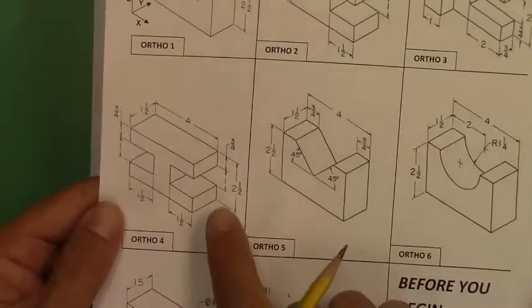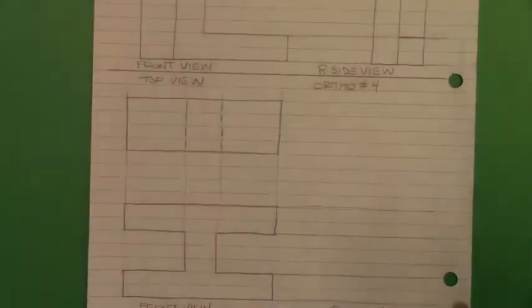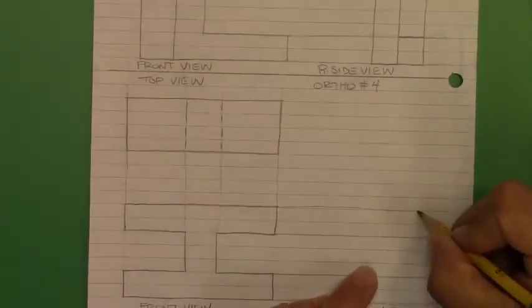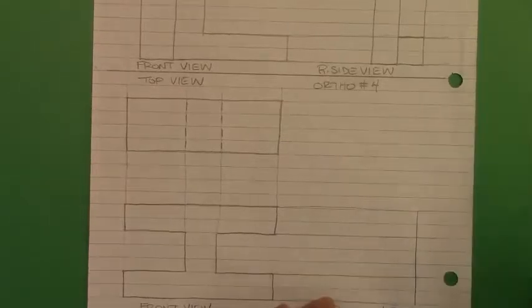Let's now look over at your right side view. Once again, we have one, two, three faces. There's a third face right in here. Let's go ahead and draw that. So we know that the height is from the bottom to the top projection line.